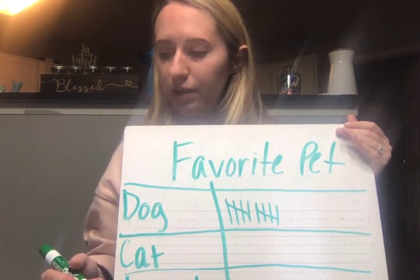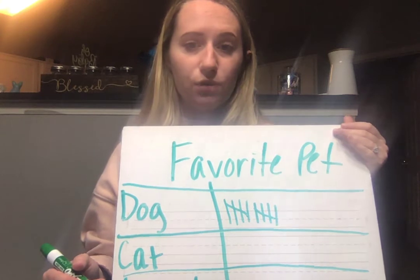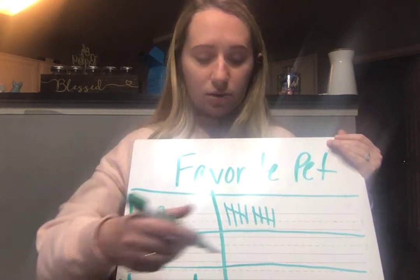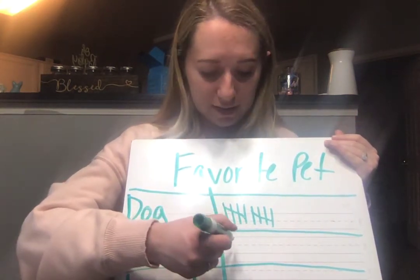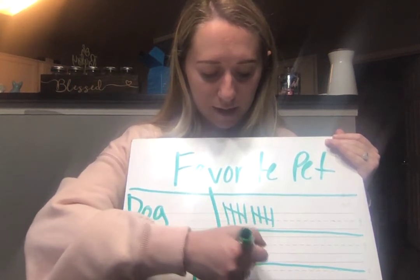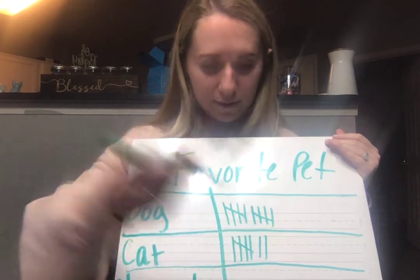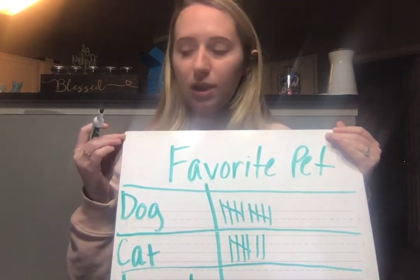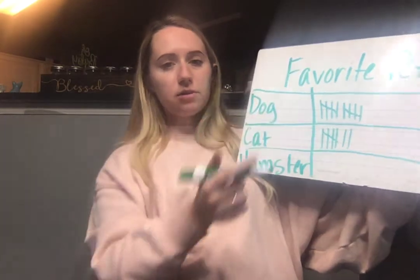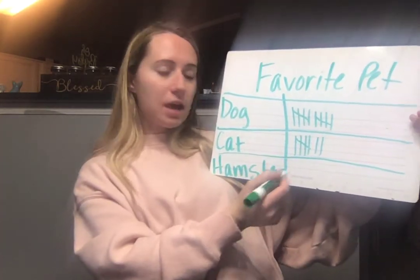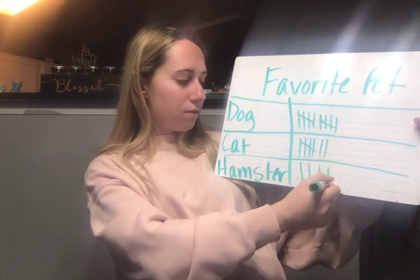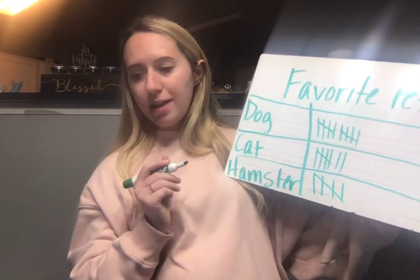I had seven students vote for cat. So I'll do seven tallies for that: 1, 2, 3, 4, 5, 6, 7. And then my last one, which was hamster — I had five students vote for that. So I'll do that one with five tally marks: 1, 2, 3, 4, 5. And that's it.